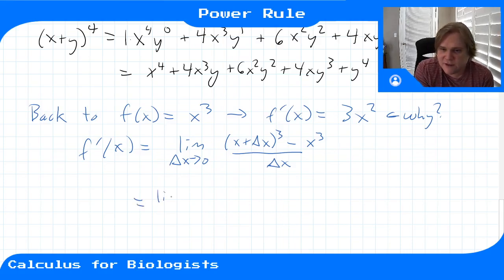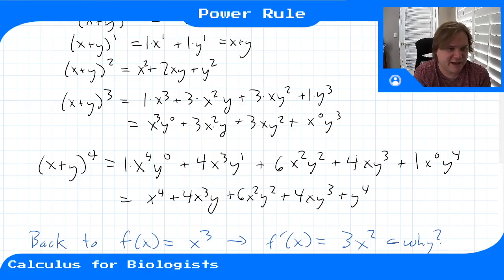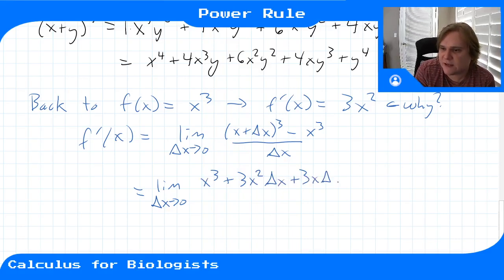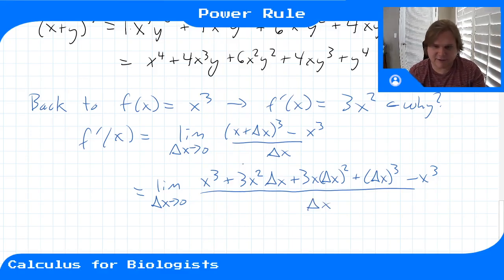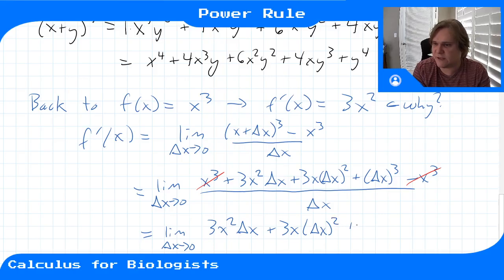Now we know this expansion — let's plug that in. With y equal to delta x, we get: limit as delta x goes to zero of x cubed plus three x squared delta x plus three x delta x squared plus delta x cubed, minus x cubed, all over delta x. Our x cubed terms will cancel, leaving us with the limit as delta x goes to zero of three x squared delta x plus three x delta x squared plus delta x cubed, all over delta x.